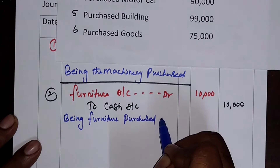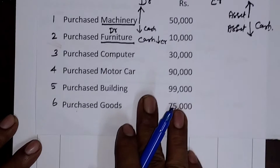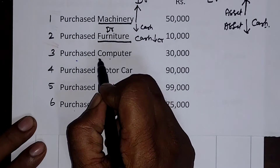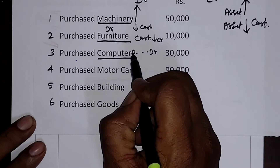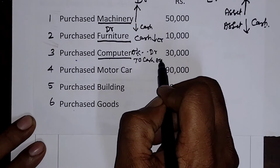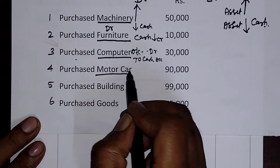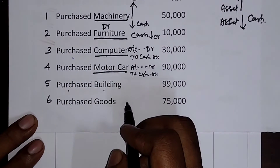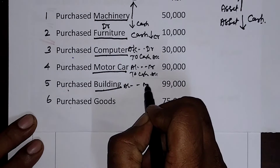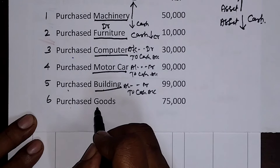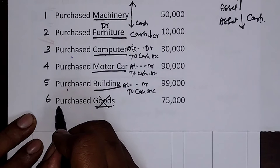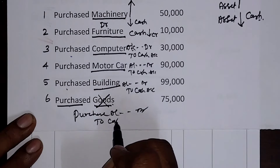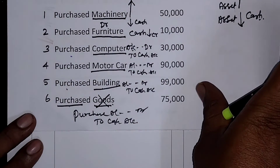For the third journal entry, purchased computer: what is entering is the computer, therefore Computer Account — Debit — To Cash Account. For motor car: Motor Car Account — Debit — To Cash Account. For building: Building Account — Debit — To Cash Account. When the word 'goods' is given, you should not write goods; instead write Purchase Account — Debit — To Cash Account. Purchase account indicates goods.